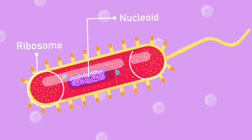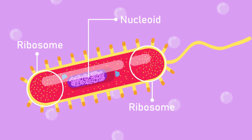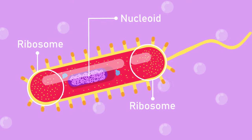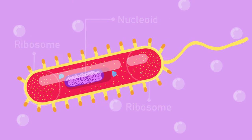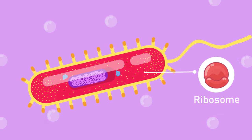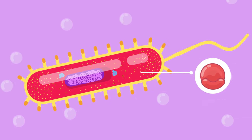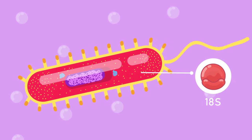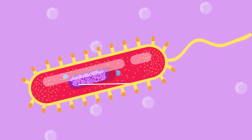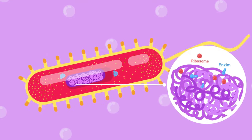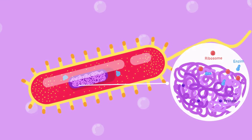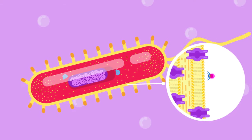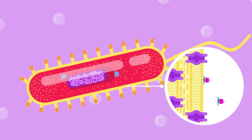The genetic material of prokaryotes is present freely in the cytoplasm. Together with few organelles, prokaryotes have slightly smaller ribosomes, about 18 nanometers in diameter, also denoted as 18S. None of the organelles are membrane bound. Their cell wall functions as a protection from the external environment.